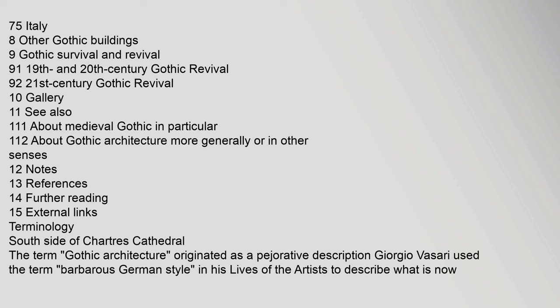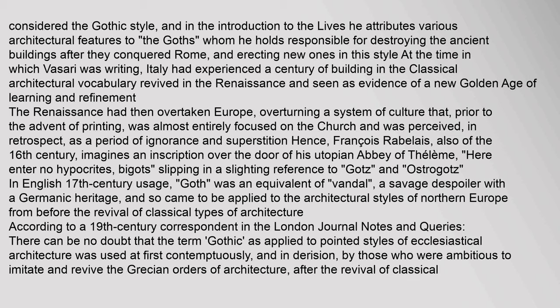The term Gothic architecture originated as a pejorative description. Giorgio Vasari used the term 'barbarous German style' in his Lives of the Artists to describe what is now considered the Gothic style, and in the introduction to the Lives he attributes various architectural features to the Goths, whom he holds responsible for destroying the ancient buildings after they conquered Rome and erecting new ones in this style. At the time Vasari was writing, Italy had experienced a century of building in the classical architectural vocabulary revived in the Renaissance, seen as evidence of a new golden age of learning and refinement.